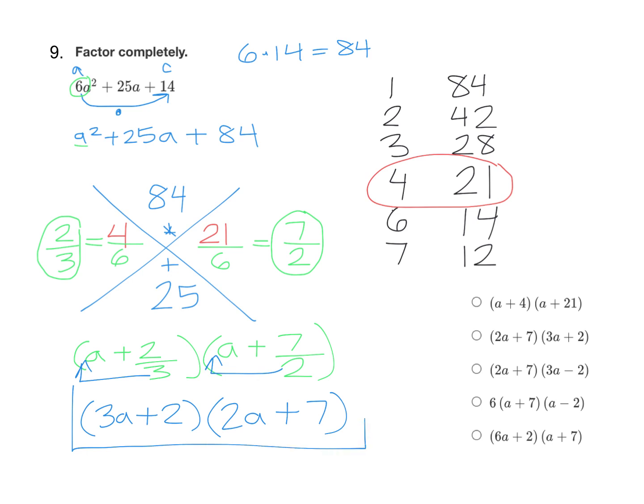That's our factored form. Now if we look at our answer choices, remember they might be in the opposite order. It looks like this choice right here is in the reverse order. If I switch these around and put the 2a plus 7 first, that matches, and then the 3a plus 2 matches.